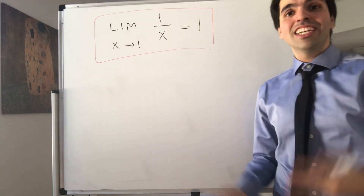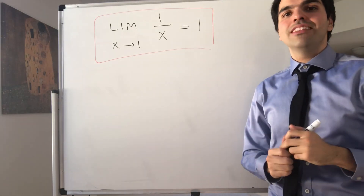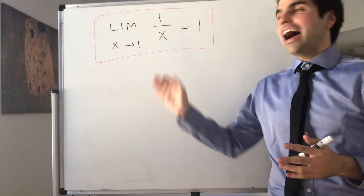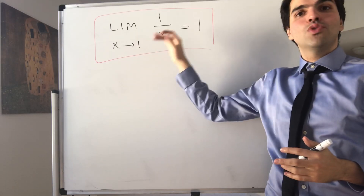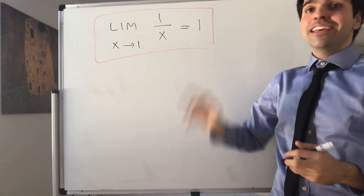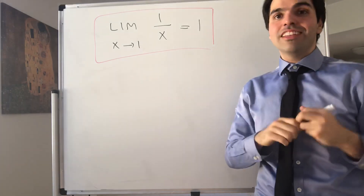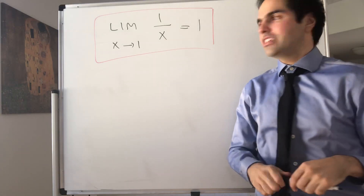Thanks for watching. Today, using the epsilon-delta definition of a limit, I show that the limit as x goes to 1 of 1 over x is 1. And this is surprisingly tricky to prove — you'll see why.